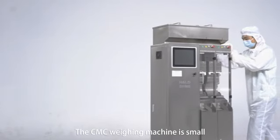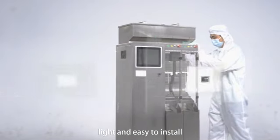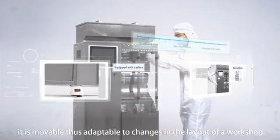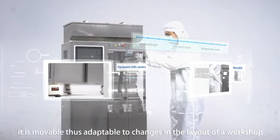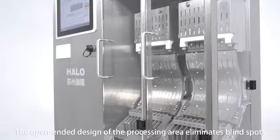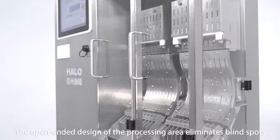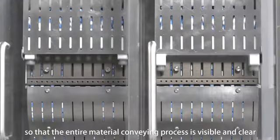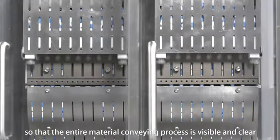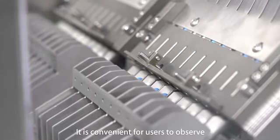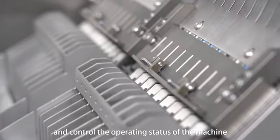The CMC Weighing Machine is small, light, and easy to install. Equipped with casters, it is movable, thus adaptable to changes in the layout of a workshop. The open-ended design of the processing area eliminates blind spots, so that the entire material conveying process is visible and clear. It is convenient for users to observe and control the operating status.